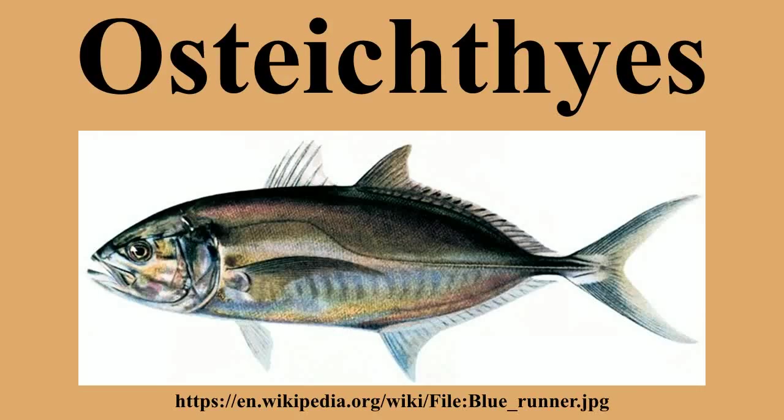Osteichthyes are primitively ectothermic, meaning that the body temperature is dependent on that of the water. But some of the larger marine Osteichthyes, such as the opah, swordfish, and tuna, have independently evolved various levels of endothermy. Bony fish can be any type of heterotroph. Numerous species of omnivore, carnivore, herbivore, filter-feeder, or detritivore are documented. Some bony fish are hermaphrodites, and a number of species exhibit parthenogenesis.